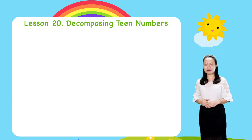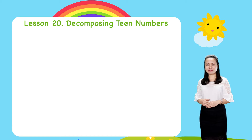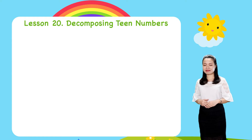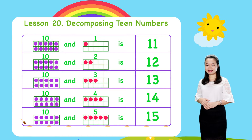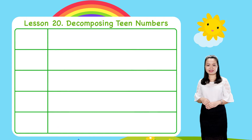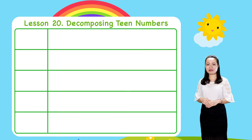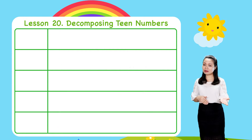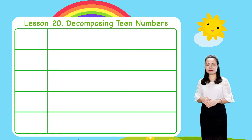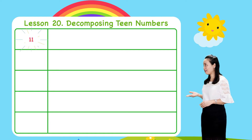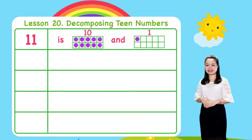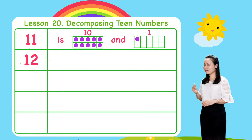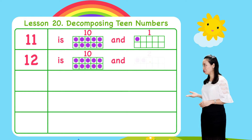Do you remember in the last lesson we learned? So, if we have a teen number, we can decompose it. Such as: 11 is 10 and 1, 12 is 10 and 2.